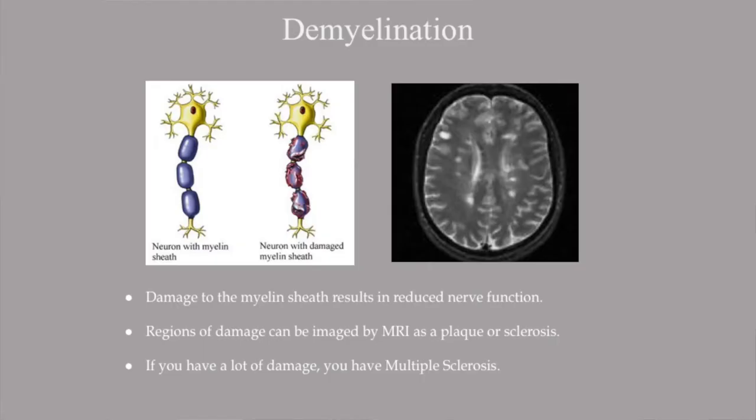Multiple sclerosis is an autoimmune response where the body attacks its own myelin sheath, and it can lead to partial damage, and in cases where the myelin sheath is completely stripped away. That is an MRI scan of a patient with MS in their brain. You can see that white patch — that is a plaque, a formation of scar tissue that has built up over time as the body has continually attacked the myelin sheath. That plaque is also called a sclerosis, and the plural being scleroses — if you have many scleroses, you have multiple sclerosis.